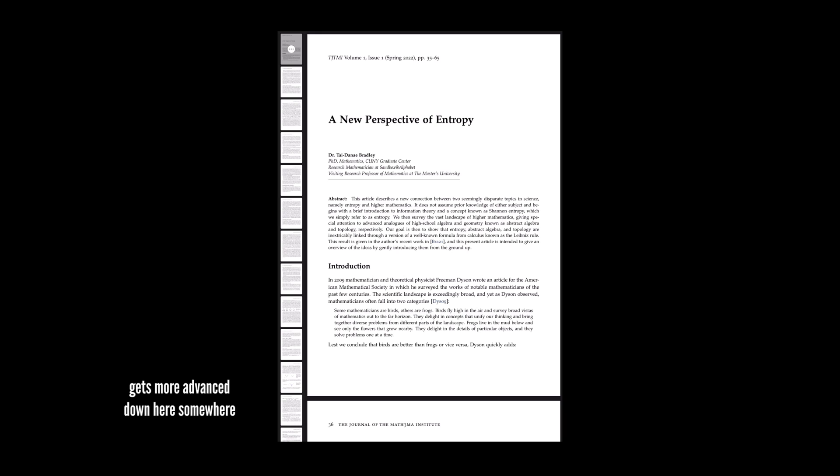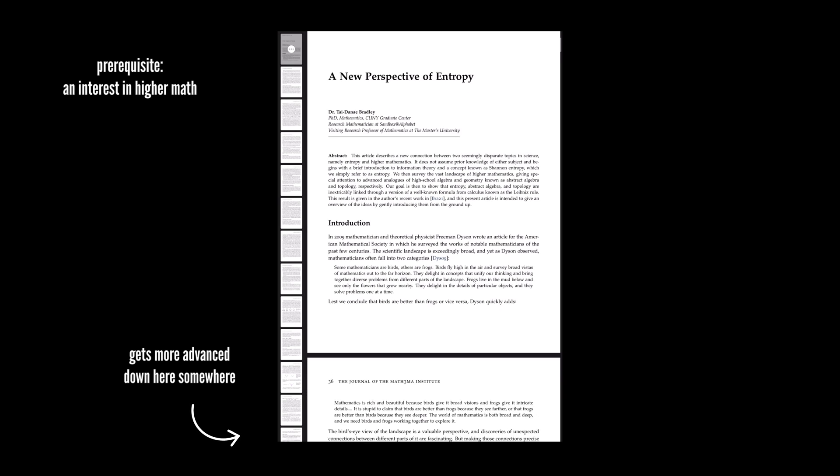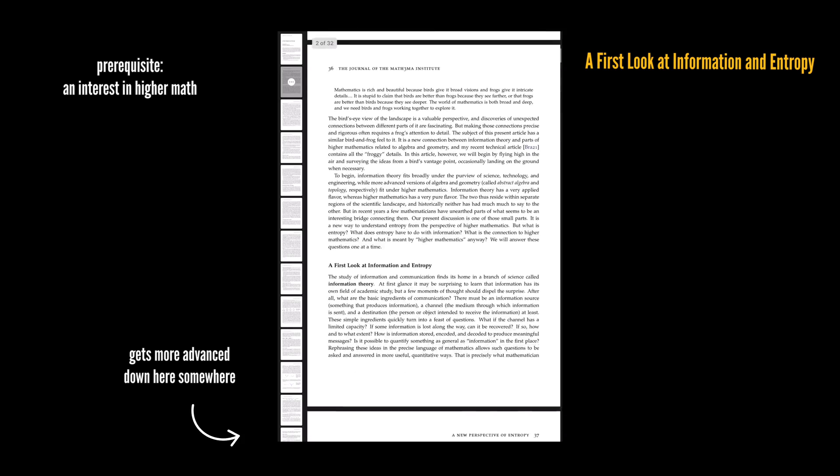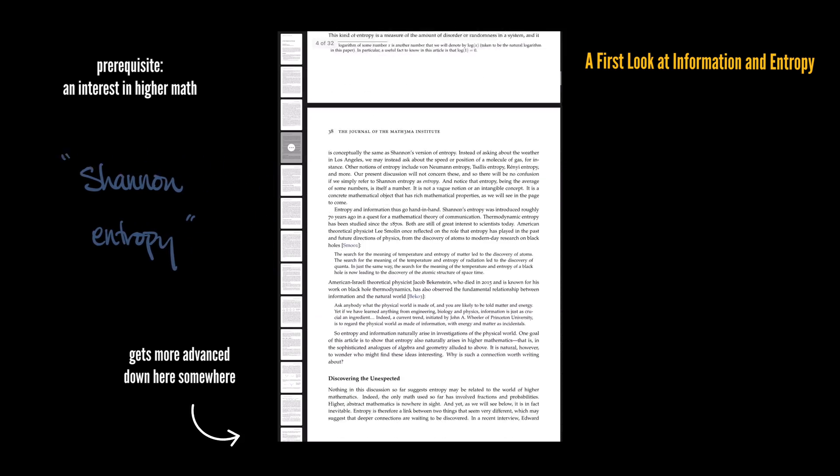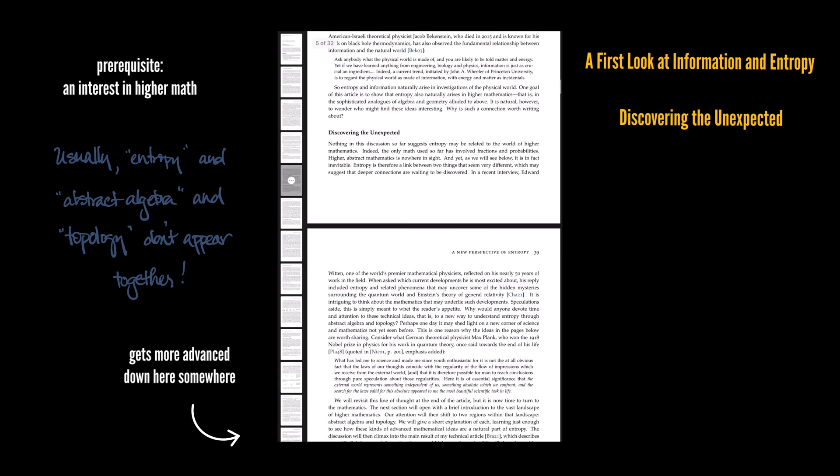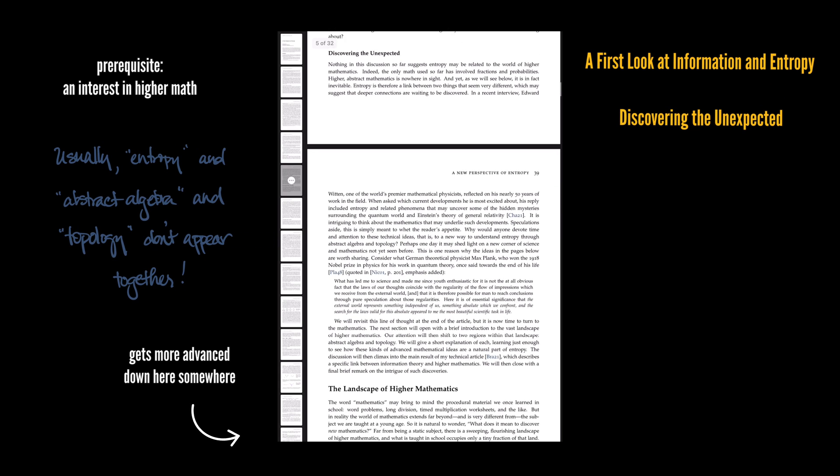Now the ideas ultimately are a bit advanced, and yet I start by assuming the reader knows very little about higher mathematics. So the paper opens with a short introduction to information theory and something called Shannon entropy, which I'll just call entropy, followed by a few words of motivation - why I think this is worth writing about in the first place.